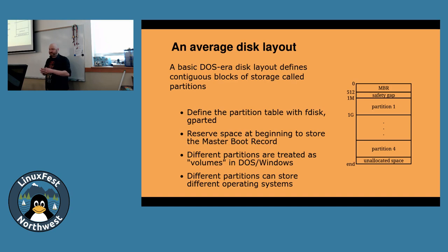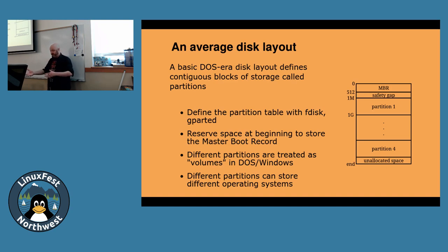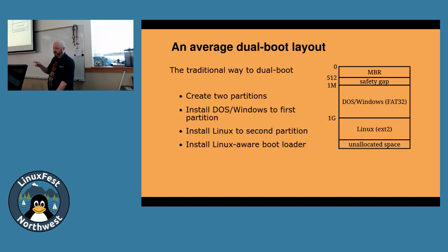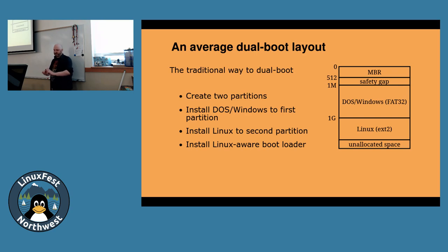You were always allowed to have about four primary partitions, and then additional partitions if you configured them to be extended. Every single one of these partitions is basically a different volume in DOS or Windows — you'd start with your C drive, then maybe a D drive for files and games. You could also use this to put a second operating system on your machine — run DOS or Windows in one partition and Linux in another. You install DOS, then you tell Linux there's already something here, don't overwrite the entire drive, just go to the second partition. Install yourself there, and then put a bootloader in the master boot record that knows it can find DOS here and Linux over there.